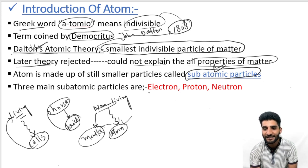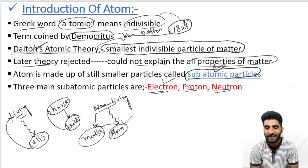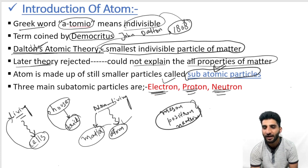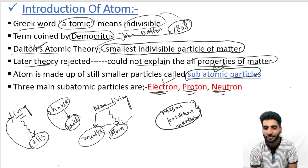An atom mainly has three particles. The first one is the electron, the second one is the proton, and the third one is the neutron. There are other particles as well — for example, meson, positron, and neutrino — but we do not focus on them as they are not important at this level. So we have to focus only on electron, proton, and neutron. This atom is mainly made up of these three types of particles.